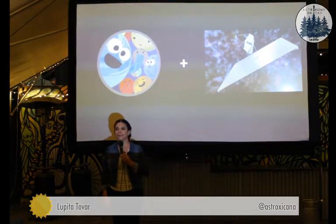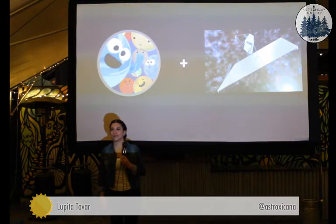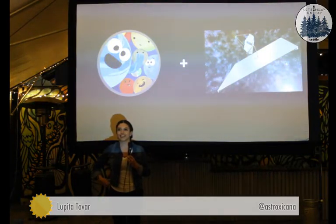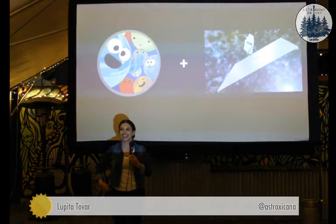Why is your spectra always in the visible range and not a higher range?